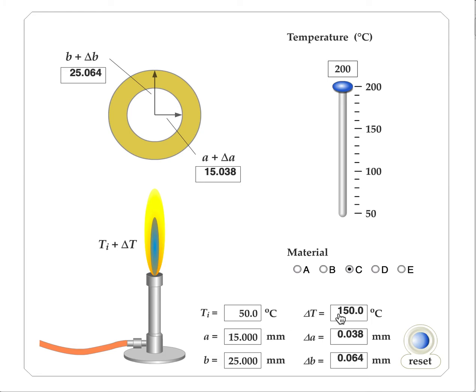And change in temperature of 150. So in this case, when we have material C, the change in the inner radius is 0.038 millimeters, and the change in the outer radius is 0.064.